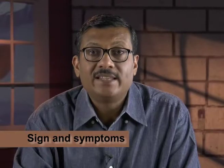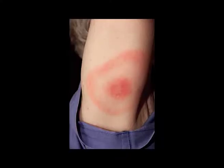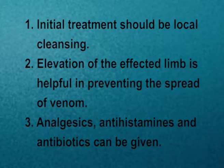Signs and symptoms: Initially, the bite is painless or produces a stinging sensation. Within the next few hours, the site becomes painful and pruritic with central induration surrounded by a pale zone of ischemia and a zone of erythema. In severe cases, the erythema spreads and the center of the lesion becomes hemorrhagic and necrotic, with a black eschar forming and sloughing weeks later, leaving an ulcer. Treatment: Initial treatment should be local cleansing. Elevation of the affected limb is helpful. Analgesics, antihistamines, and antibiotics can be administered.